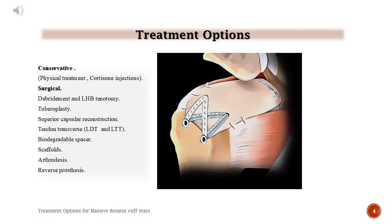Surgical treatment options include: debridement and long head of biceps tenotomy, tuberoplasty, superior capsular reconstruction, tendon transfer — latissimus dorsi transfer and lower trapezius transfer — biodegradable spacer, scaffolds, arthrodesis, and reverse prosthesis.